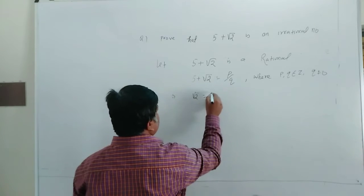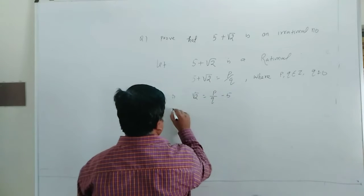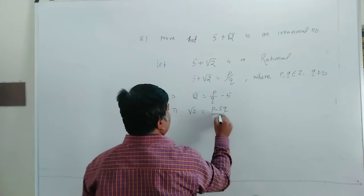Under root 2 equals P by Q minus 5, which implies under root 2 equals P minus 5Q by Q.